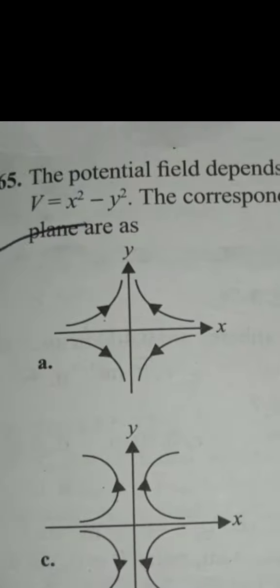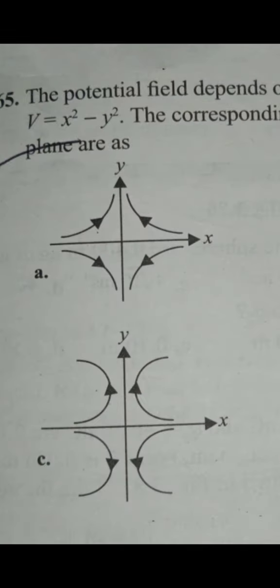So ultimately we are left with option A, which states that the electric field lines and the arrows are also indicating the same thing, that along the y direction the electric field lines are going to increase and they are towards the plus y, and along the x direction they are going to decrease.